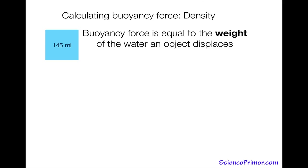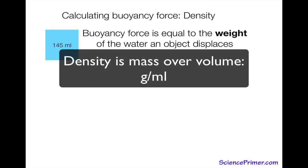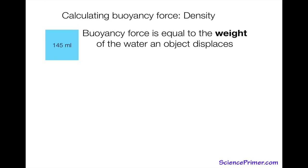To go from volume to weight we need some conversion factors, and the new concept to introduce here is density. Density is simply how tightly packed material is in an object — the more tightly packed, the more dense. Density has units of mass per volume, or grams per milliliter, and conveniently the density of water is defined as 1 gram per milliliter.